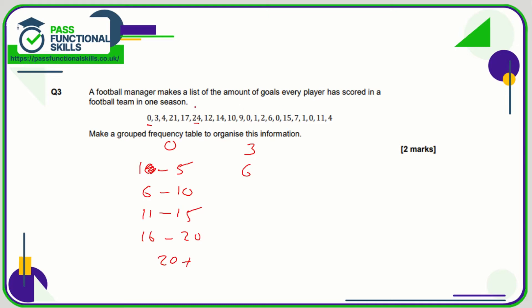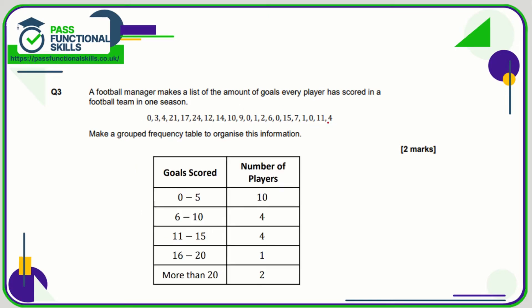In the mark scheme they've used zero to five, six to ten, eleven to fifteen, sixteen to twenty, and twenty-plus, and these numbers work with the data given. But that's not the only solution — you could do groups of three, like zero to three, four to seven, and so on. That would be equally valid.